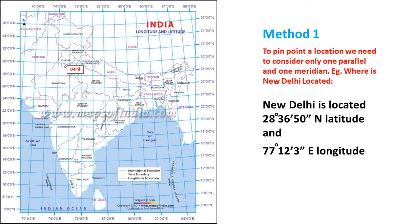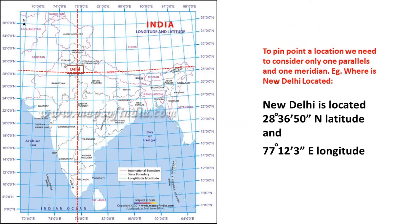Today, most devices use the triangulation method — using one latitude and one longitude to triangulate or pinpoint a location — which is called the GPS system. GPS stands for Global Positioning System and is used by cars, aeroplanes, ships, and mobile phones. The system of reading GPS in degrees, minutes, and seconds is called DMS. This is Method 1 of reading a map.